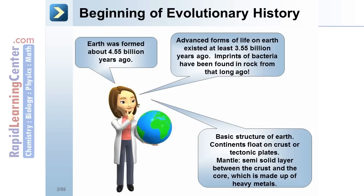The mantle is a semi-solid layer between the crust and the core, and the core is made up of heavy metals.